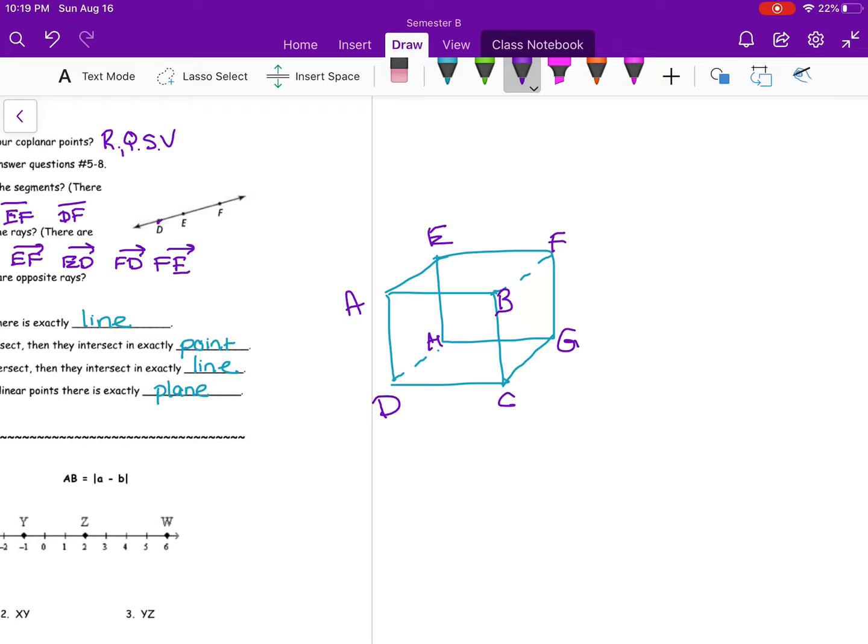Sometimes you're going to get a question of like if they are coplanar. So remember coplanar is like a flat surface. So if you think of like the front here, there's your flat surface. So the ones that are coplanar are A, B, C, and D. Now coplanar could be the side. So D, F, G, C.